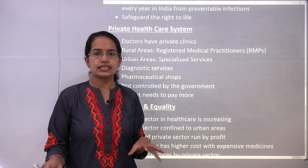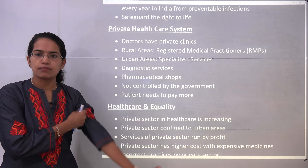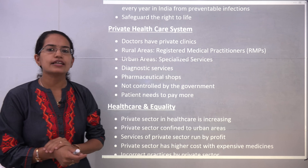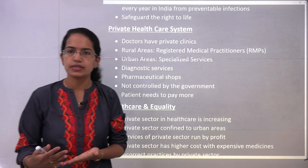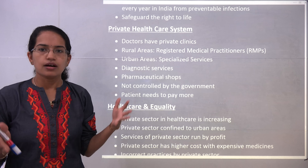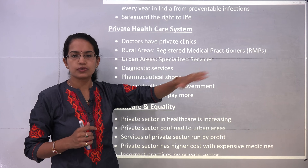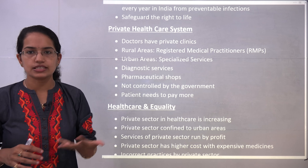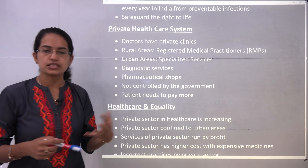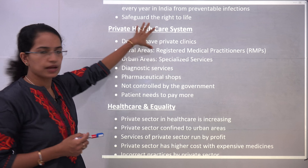As we saw, the public healthcare system is run by the government. Private healthcare systems are run by private clinics or personal doctors, and they exist in rural as well as urban areas. However, multi-specialty hospitals exist only in urban centers, as rural areas do not have enough patient capacity to sustain them. In rural areas you have Registered Medical Practitioners (RMPs). In urban areas you have specialized services, diagnostic services like CT scan, MRI, ultrasound, sonography, and various pharmaceutical shops.